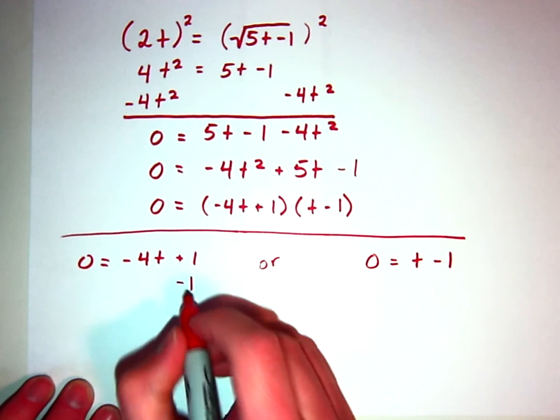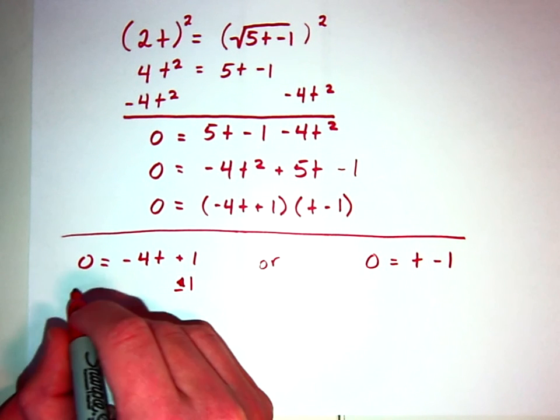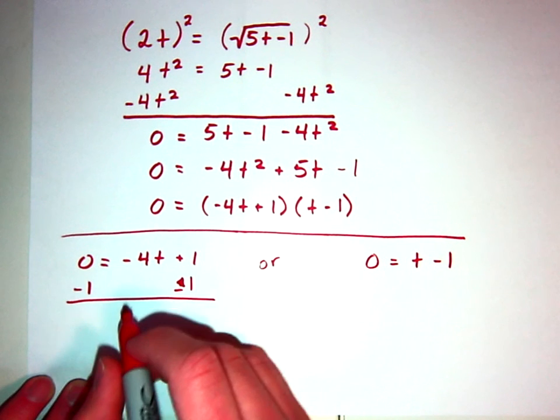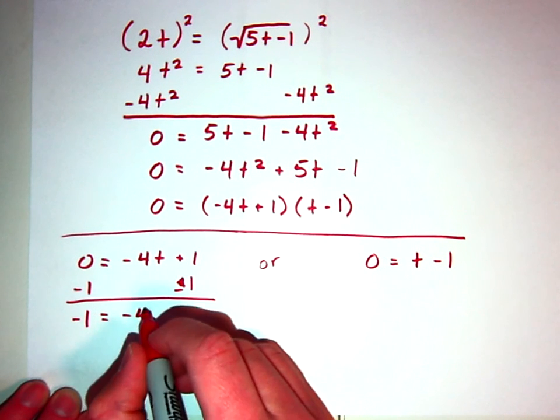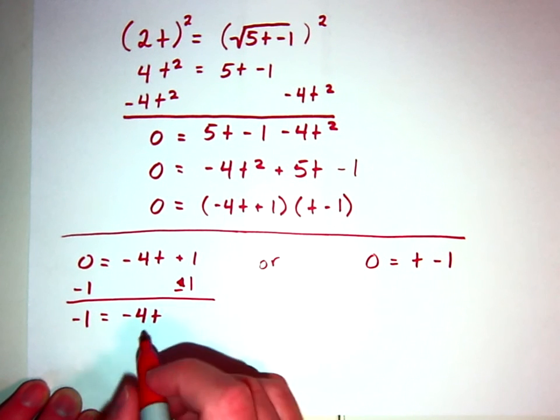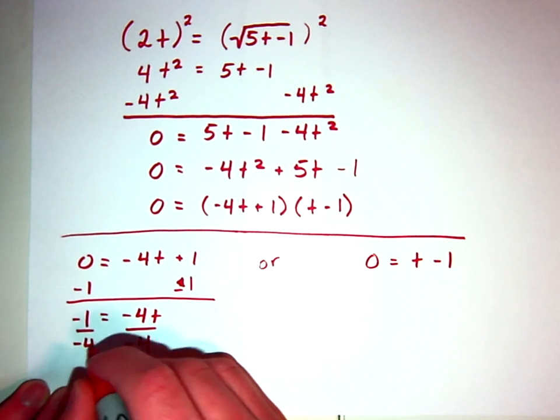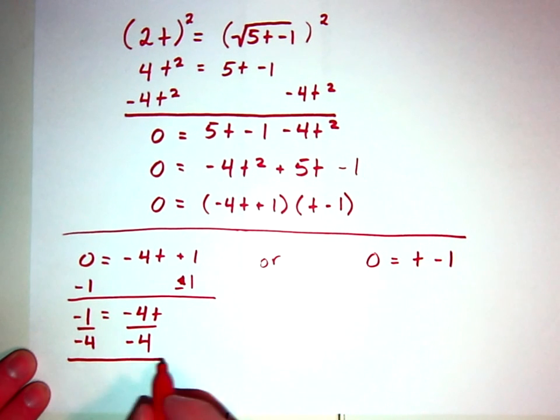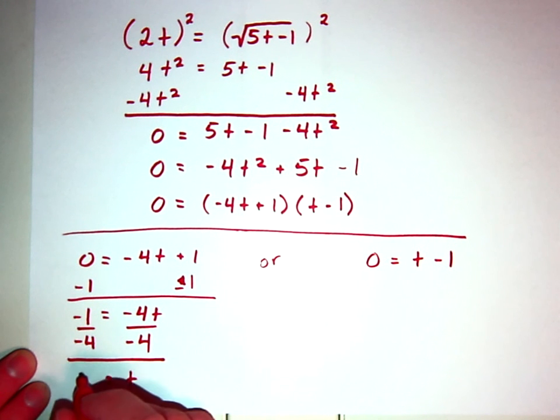So, let's solve this one. I add 1 to both sides, or sorry, subtract, I said it wrong, subtract 1 from both sides, that gets me to negative 1 equals negative 4t. Divide both sides by negative 4. Gets us to t, and hopefully we know by now that a negative over a negative could be simplified to just a positive number, getting us to 1/4 equals t.